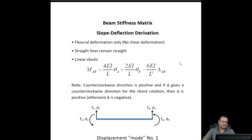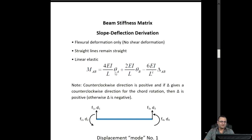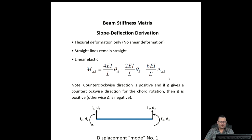As you can see here, the well-known slope deflection equation relates the moments with the rotation and deflection at the ends. MAB, where A is the near point and B is the far point, equals 4EI over L, where EI is the flexural rigidity of the member and L is the length of the member, times theta A. Theta A is the rotation at the near end, plus 2EI over L times theta B, the rotation at the far end, minus 6EI over L squared times delta AB, which is the chord rotation for the part of the beam considered.